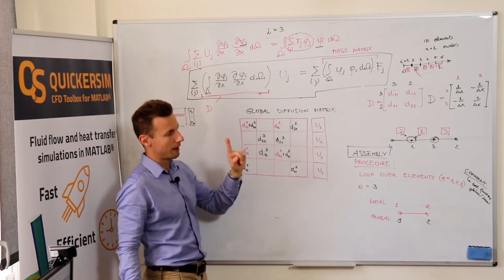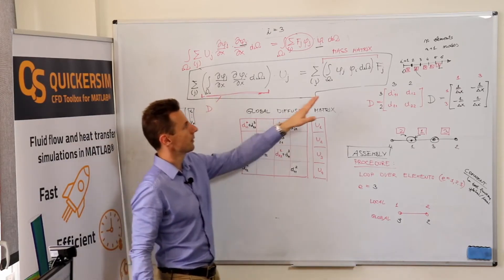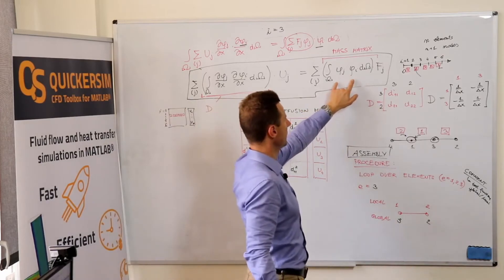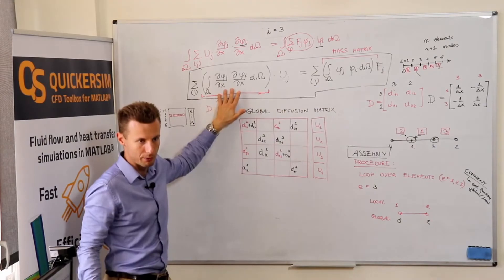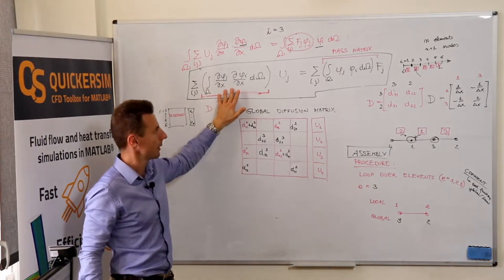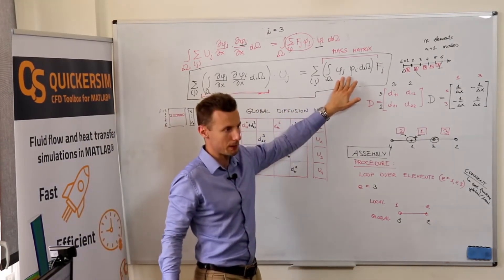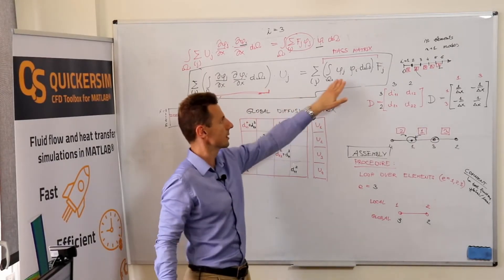Also, the other difficulty is that, well, we have worked so far with the diffusion matrix. But imagine already the mass matrix. It does not involve the gradients, but the shape functions itself. And you need to integrate over the physical domain over x, y.